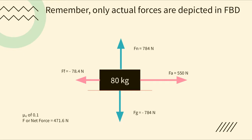The completed diagram shows: force applied to the right at 550 N, force friction to the left at −78.4 N, fg = −784 N downward, and fn = 784 N upward. These are all real forces depicted in the FBD. Net force has no vector in the diagram because it's not an actual force — it's the sum. Coefficient of kinetic friction was 0.1, and net force was 471.6 N, the difference between the right and left vectors.